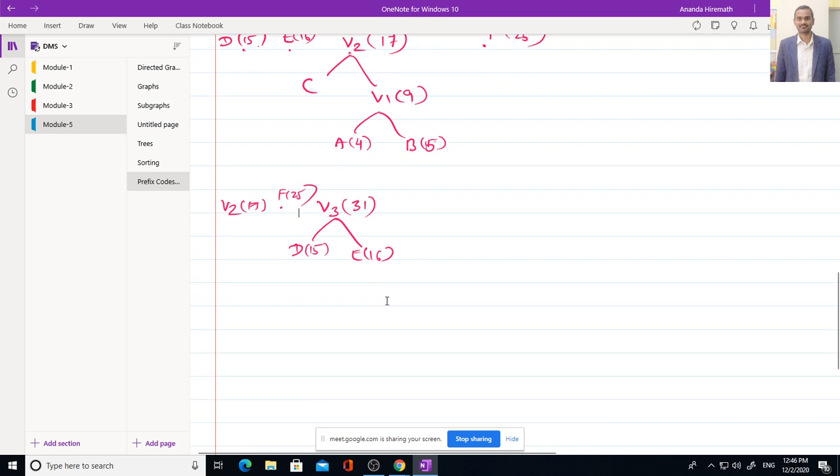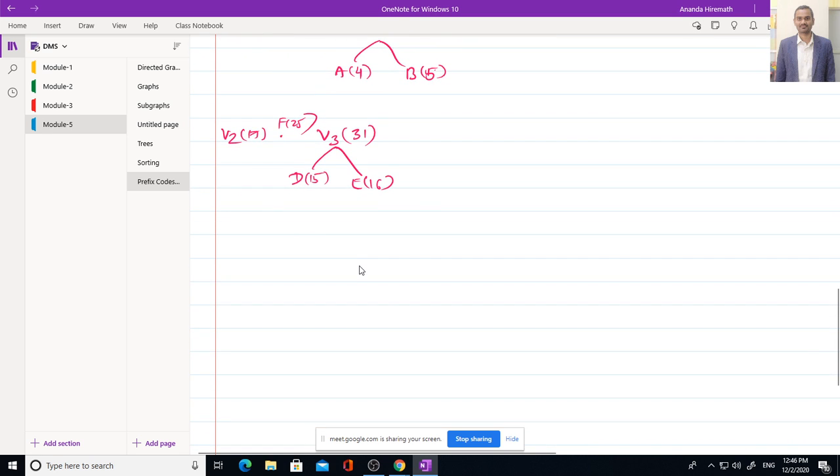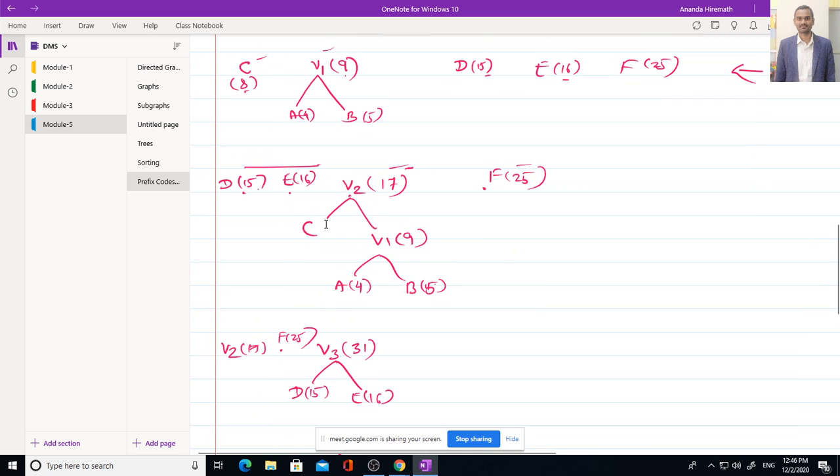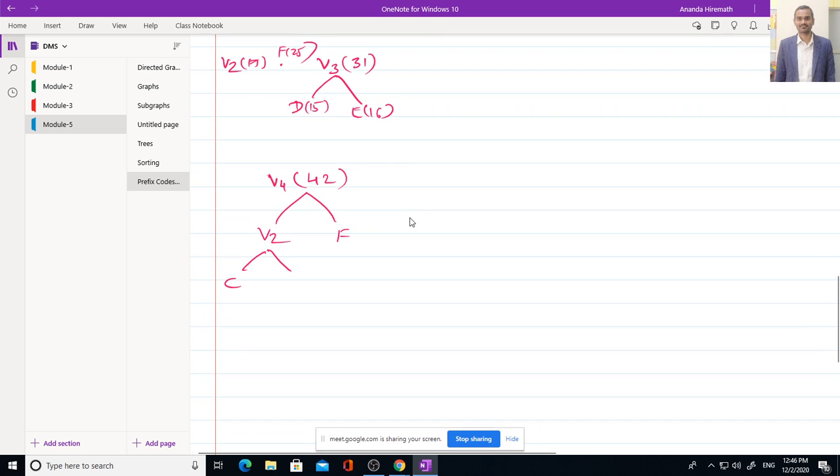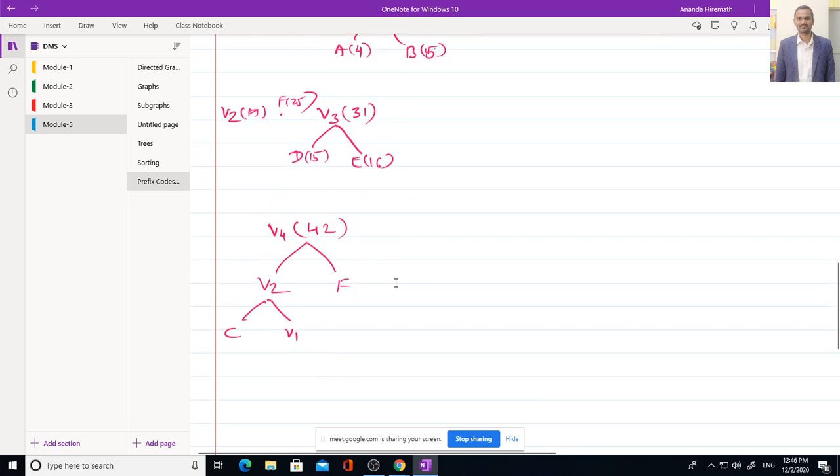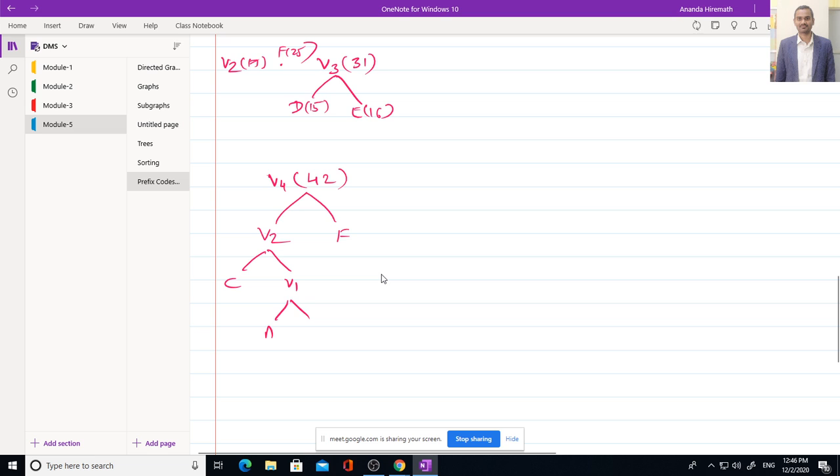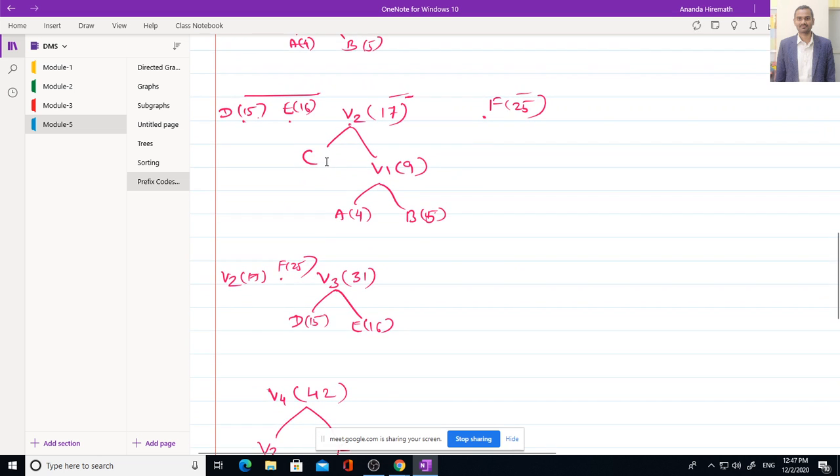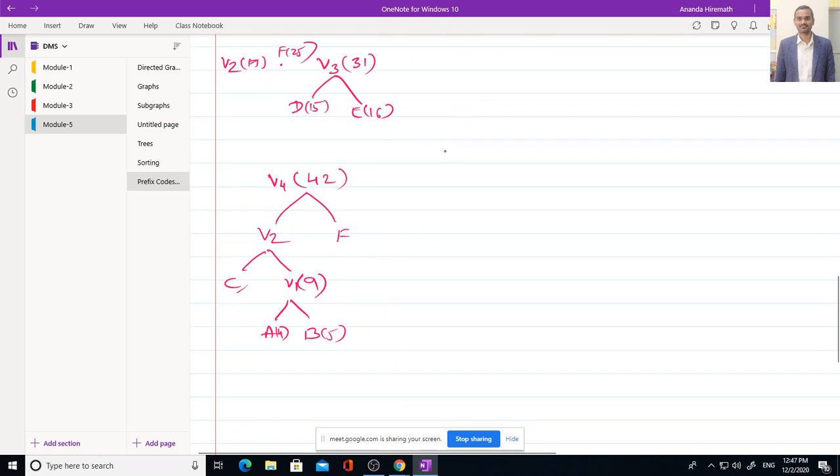Now I will merge V2 and F. I will add them. 25 plus 17 is 42. I will write it as V4 whose weight is 42. Let me split it. V2, then there is F. V2 is nothing but C, V1. V1 is again A, B. This is 4, this is 5, 9. For C, the weight is 8. So V2 is 17. For F, we have 25.